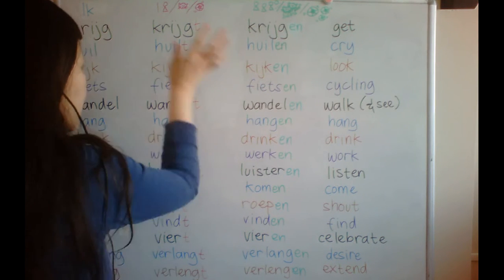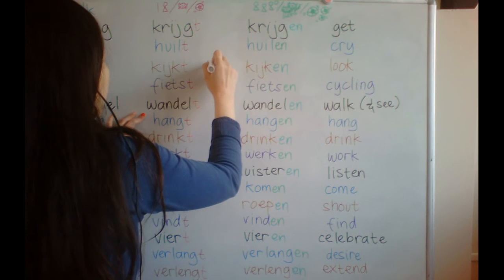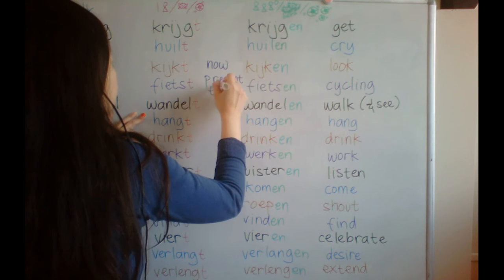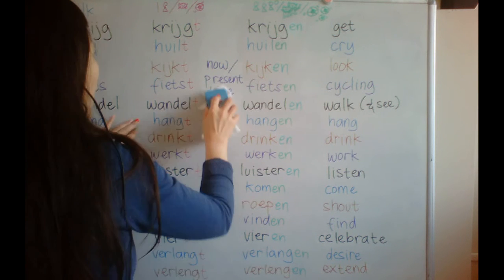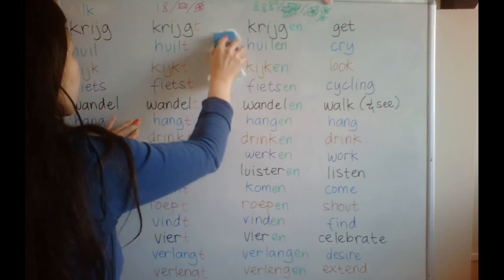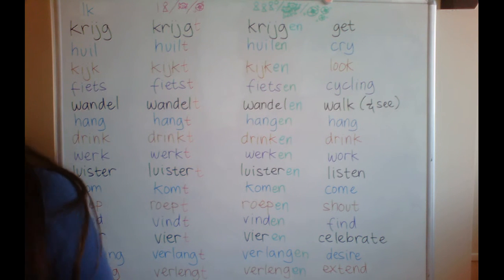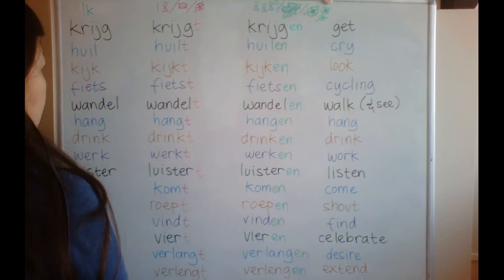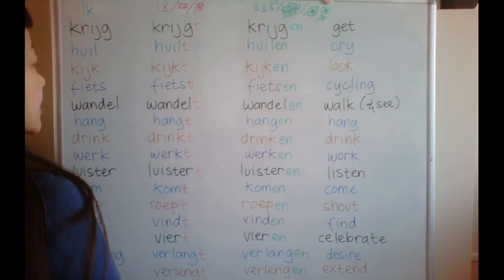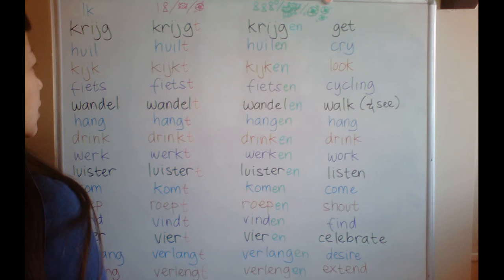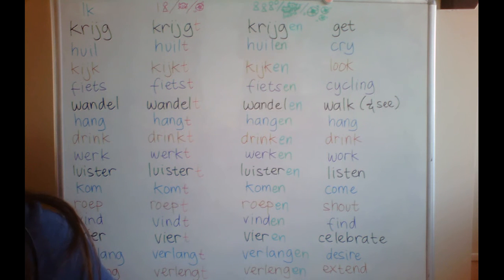This verb is used for now, or for the present time. How to put this verb in a sentence? We already learned about it in the previous video — the link will be put below. This is the first format used for the verb. They have more than one format or formation, but this is the most commonly used.